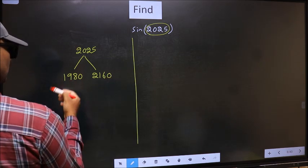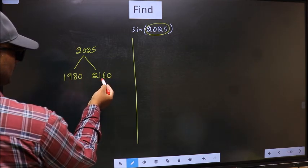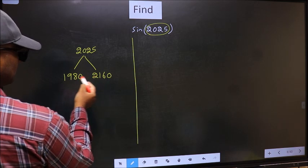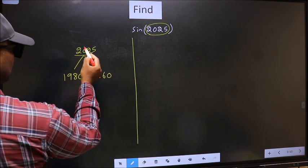This is 180 times 11, and this is 180 times 12. Between these two numbers, this number lies.